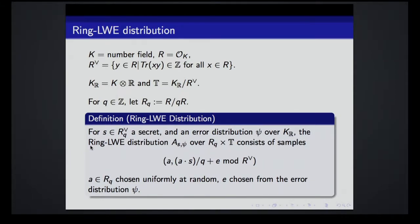We also heard more about the Ring LWE distribution and problem from Damien this morning. Let me quickly review. What is Ring LWE? You take a secret — think of it as the coefficients of a polynomial, so just a secret polynomial. You generate a bunch of random samples: you have secret S, generate A uniformly at random, multiply A times S — the analog of the inner product — and then add some small errors. Given these samples, can you find the secret?